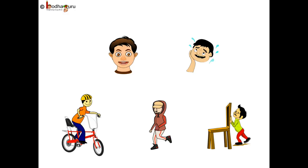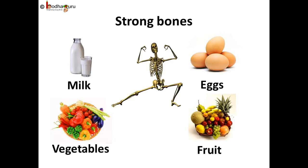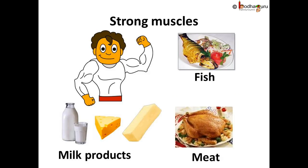Since bones and muscles are so important, it is very important to take care of them. We should take a healthy diet. The bones are made up of calcium and phosphorus. Bones get brittle and break very easily if there is a lack of calcium and phosphorus in our diet. So we should eat food like milk, vegetables, fruits, and eggs. Sun rays in the morning and evening are also good for the bones. The muscles are made up of proteins, so take a diet which has milk products, fish, and meat. This diet makes muscles strong and healthy.